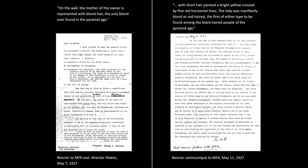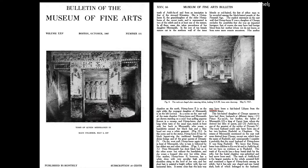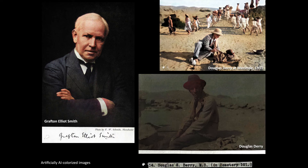Just a few days after the discovery, Reisner wrote a letter home to the assistant director at the MFA declaring that the mother of the owner is represented with blonde hair — 'the only blonde ever found in the pyramid age.' A few days later, in a more formal communiqué, he described her with short hair painted a bright yellow crossed by fine red horizontal lines, concluding 'the lady was manifestly blonde or red-haired, the first of either type.' Before the year was out, an MFA bulletin article declared that Marisanq's mother may have been a fair-haired Libyan from the western desert.